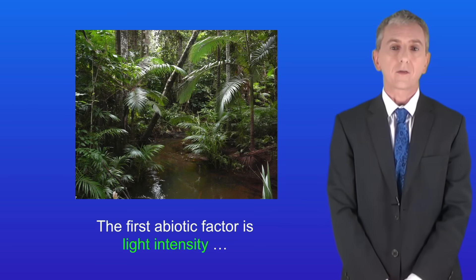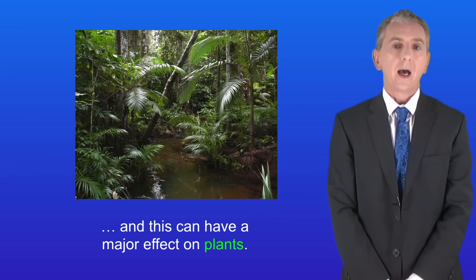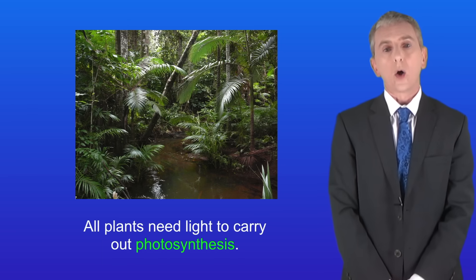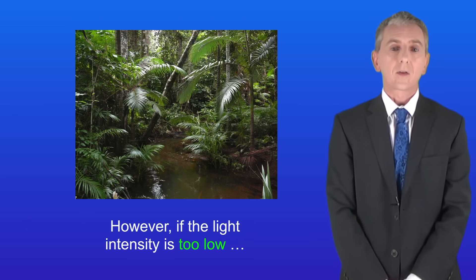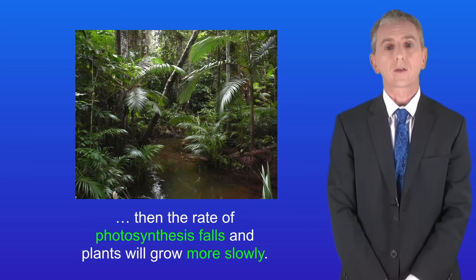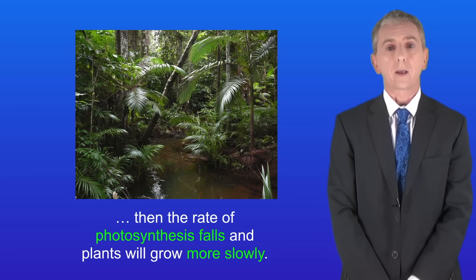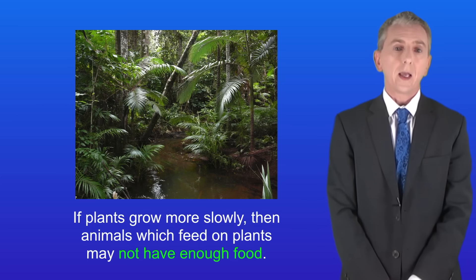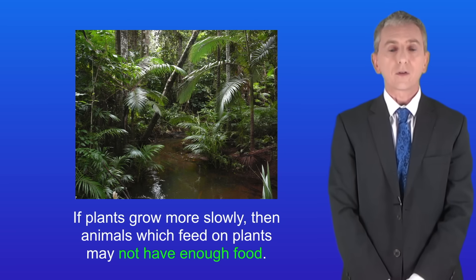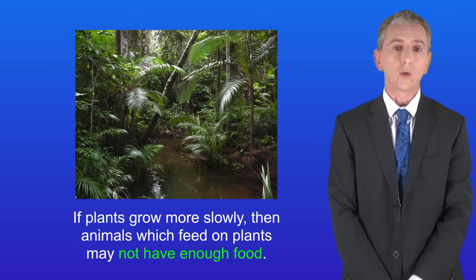The first abiotic factor is light intensity, and this can have a major effect on plants. All plants need light to carry out photosynthesis. However, if the light intensity is too low, then the rate of photosynthesis falls and plants will grow more slowly. This can have a major impact on a community — if plants grow more slowly, then animals which feed on plants may not have enough food.